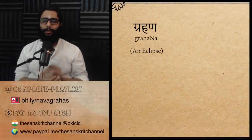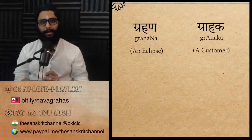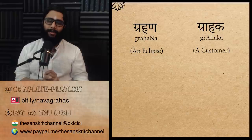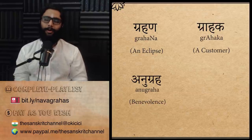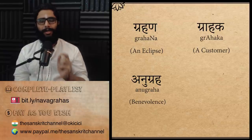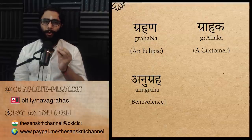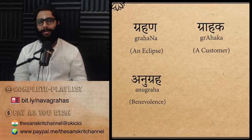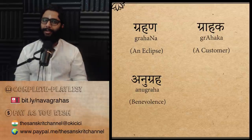The word grahana is used to mean an eclipse, the word grahaka refers to a customer, and the word anugraha is used in the context of a blessing. Did you ever notice how these three Sanskrit words — grahana, grahaka and anugraha — which seem so close together in Sanskrit, are translated to mean such widely different things in English?